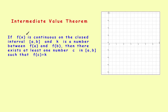It really starts out by saying that if you have a continuous function f of x, the important thing is that it has to be continuous on a closed interval from a to b. So let's suppose it went from a — we'll let a be 1 — and let's suppose that b is 5. So you've got a closed interval from a to b.